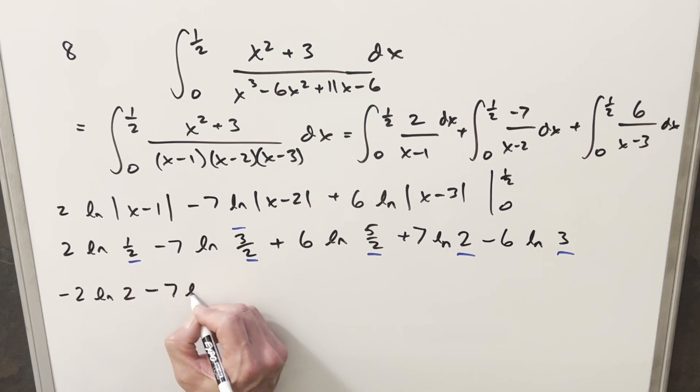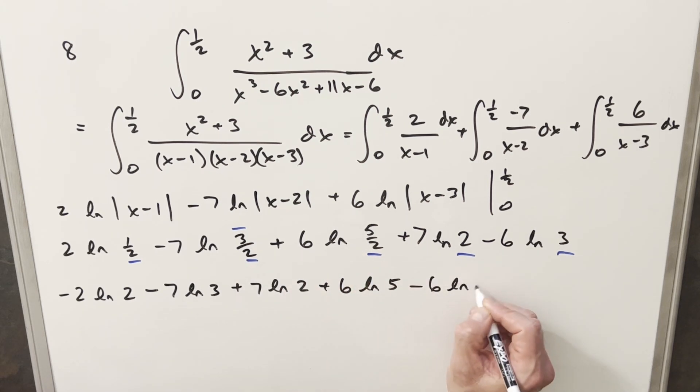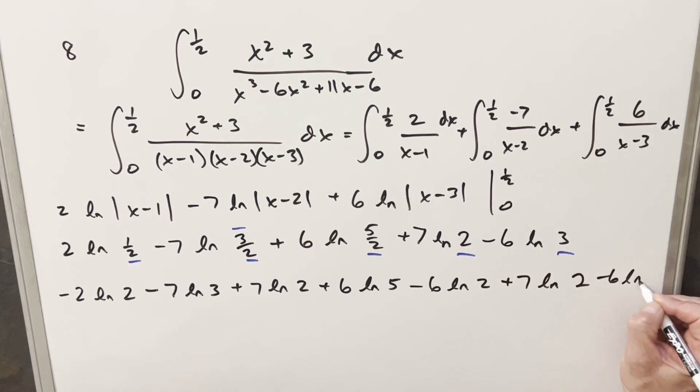This I can write as -7 ln(3/2). Splitting this up, this is like a -ln(2). I can write this as +7 ln(2) here. This one, I can write this as +6 ln(5) minus, same thing I'm doing here. Minus 6 ln(2), plus 7 ln(2), and then we'll have our -6 ln(3).